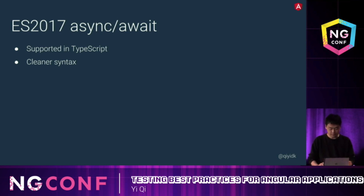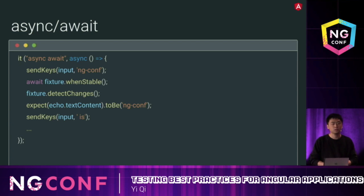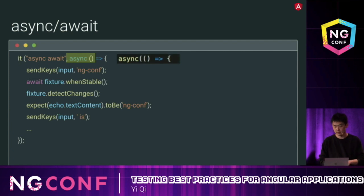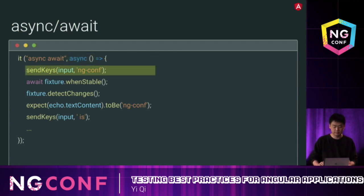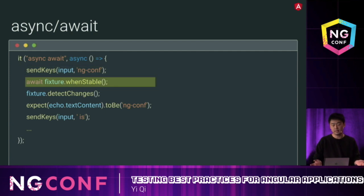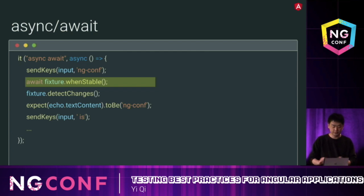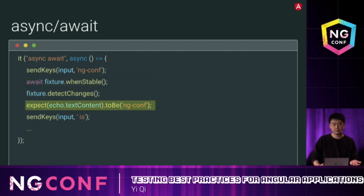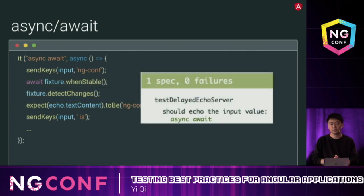Let's take a look at what it looks like in a test. We add the async keyword to the function — note the async helper is a function, but the async keyword is different. We send keys and await whenStable. The await keyword pauses execution until the promise is resolved. Then we detect changes and check the test. Everything works well and the code looks much nicer.